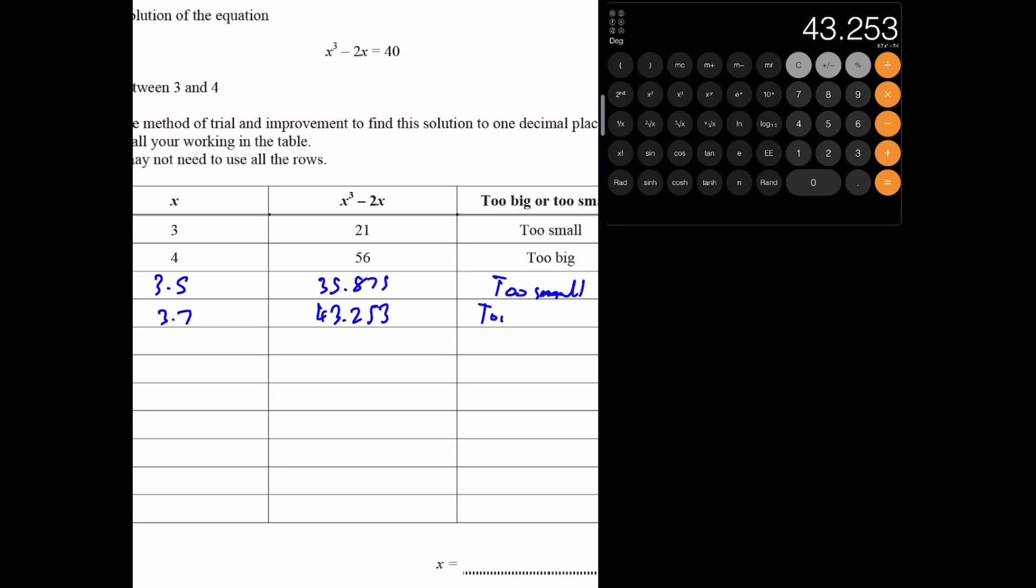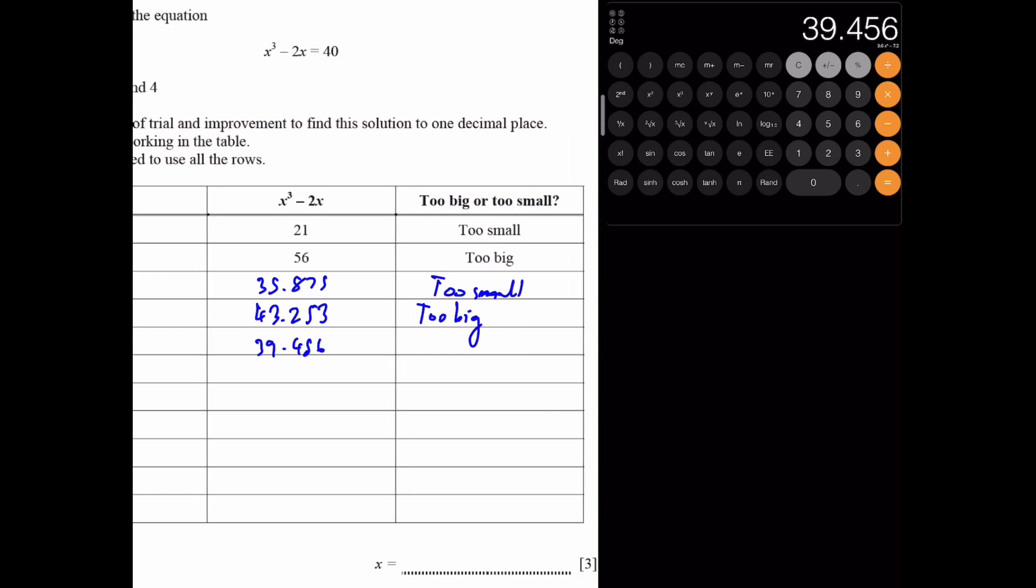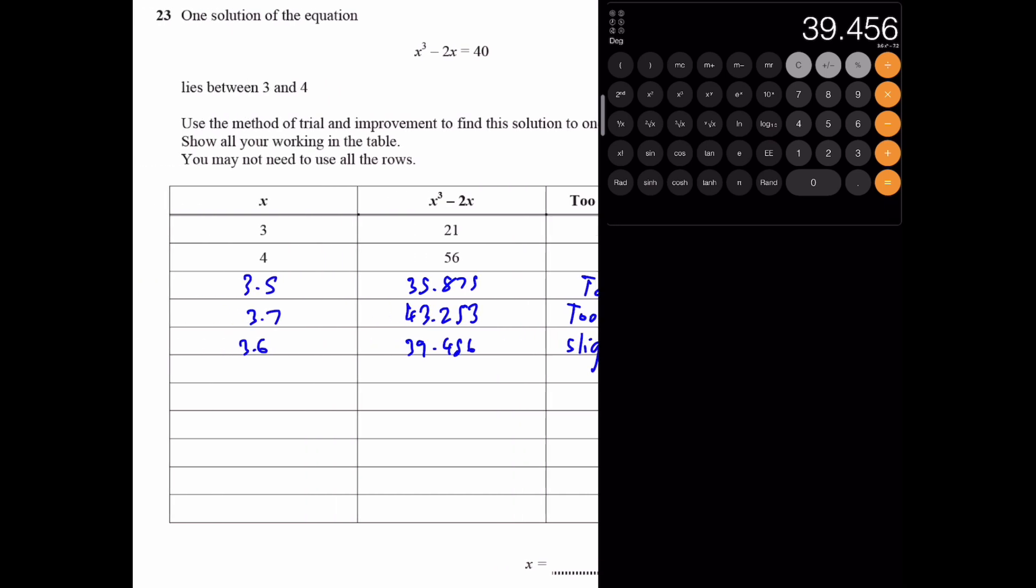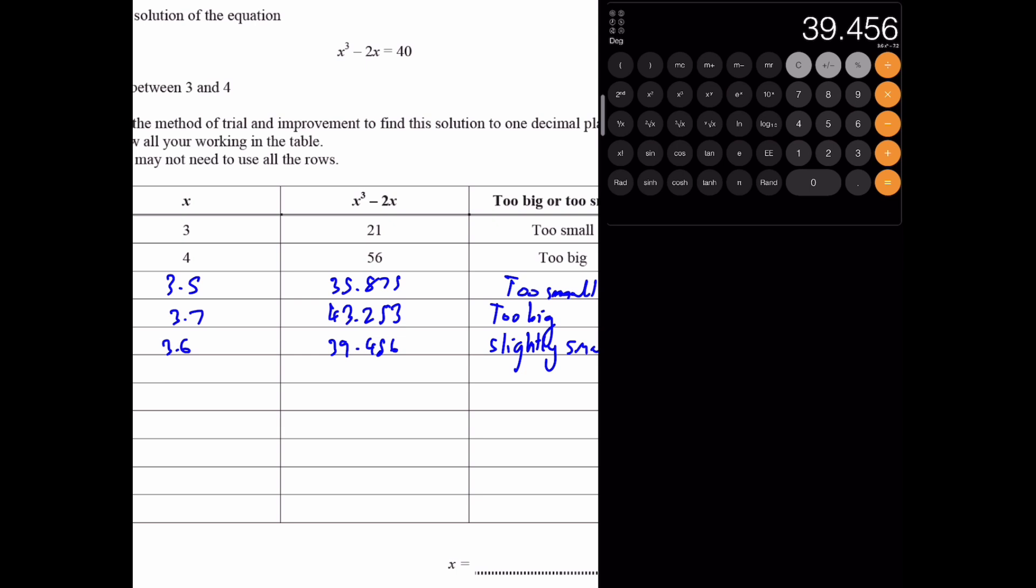Now we do 3.6. 3.6 cubed minus 2 into 3.6. We get 39.456, which is slightly small. Now, we have all the 1 decimal place done. Which of these is closest to 40? It's 39.456. So, the answer for x is 3.6 to 1 decimal place.